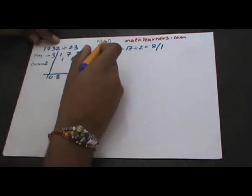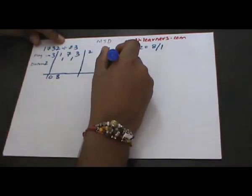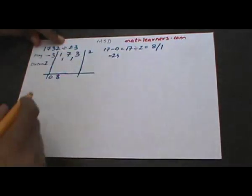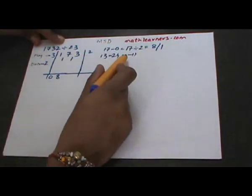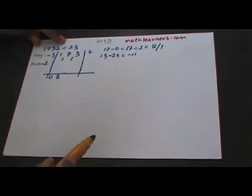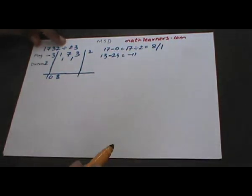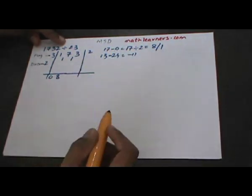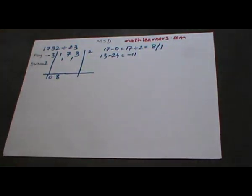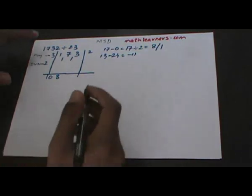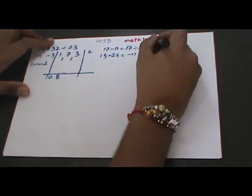We follow the same MSD process: 8 multiplied by 3 gives 24, that will be subtracted from 13, which gives minus 11. Since we get a negative number, we do not want a negative number after subtraction. To increase this remainder we will have to reduce the quotient by 1.